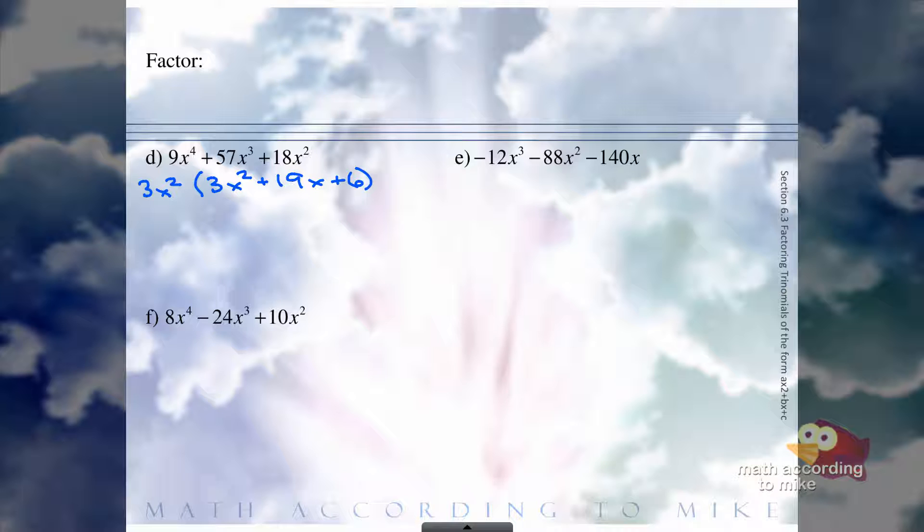So off to the side, we need to do A times C. Our A is 3, our C is 6, so A times C is 18. The factors of 18 that add to 19 would be 1 and 18. So we'll have 3X squared that we pulled out times 3X squared on the inside. Instead of 19X, we'll now say 1X plus 18X plus 6.